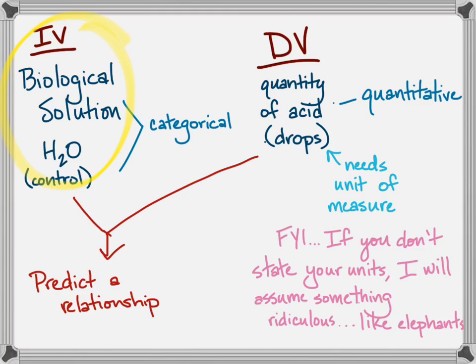Independent variables are manipulated by the scientist, I change my IV, and the dependent variables are measured and change in response to the IV. Sometimes these are called responding variables. And so that's going to tell you that my number of drops will be measured and will depend on the solution that I choose to test.